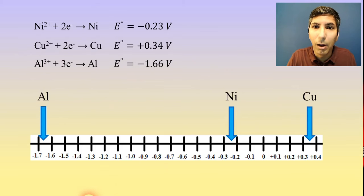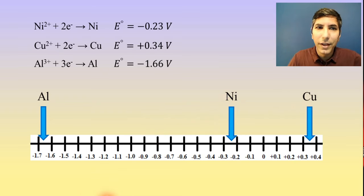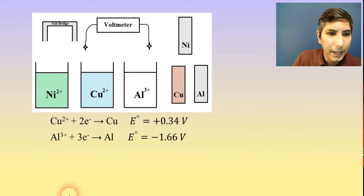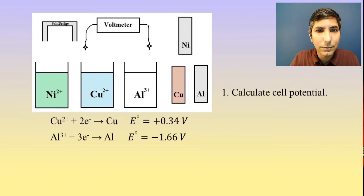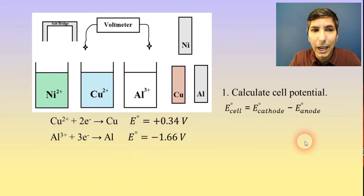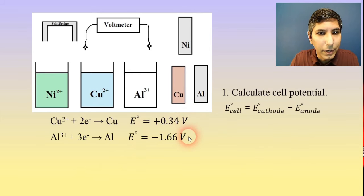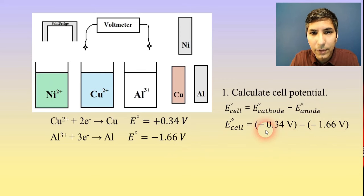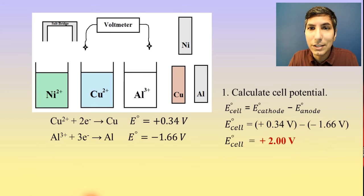If the question said what's the smallest potential difference, it would be nickel and copper. But here we're looking for the greatest difference, so we've decided it's going to be copper and aluminum. We plug into E-cell equals E-cathode minus E-anode. Copper goes in the cathode location and aluminum goes in the anode position. When you calculate this, 0.34 volts plus 1.66 volts gets us a total E-cell of about 2.00 volts.